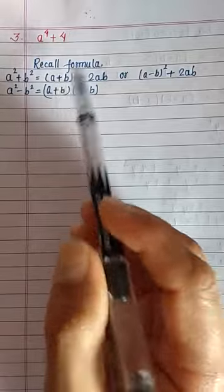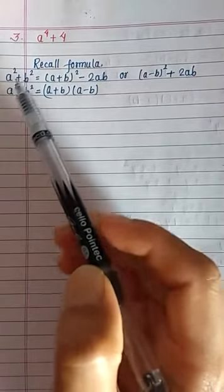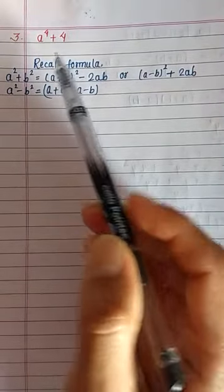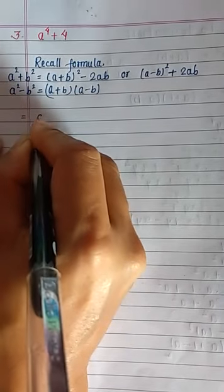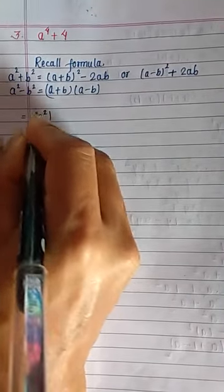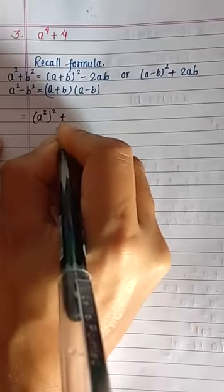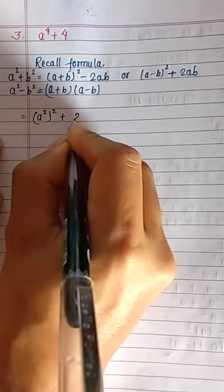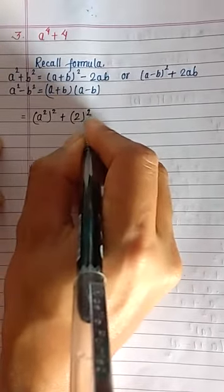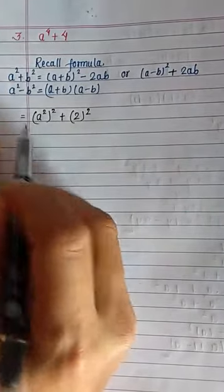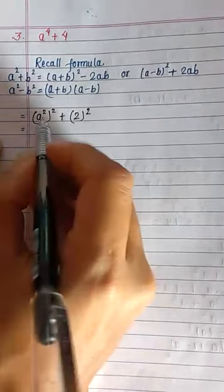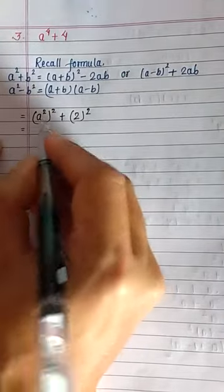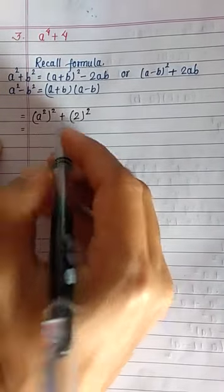In the previous two questions there were three terms, but in this question there are only two terms, so we don't have to arrange. We can start. a to the power 4 can be written as a square whole square, and 4 is a square number — it is the square of 2, so 2 square. Now this is in the form a square plus b square, where a is a square and b is 2.